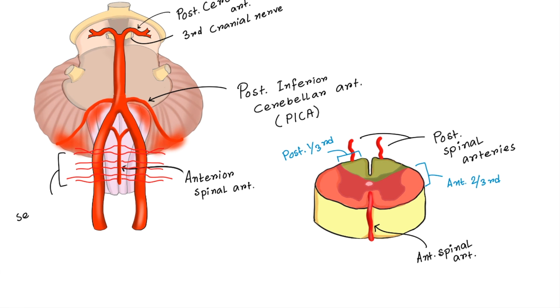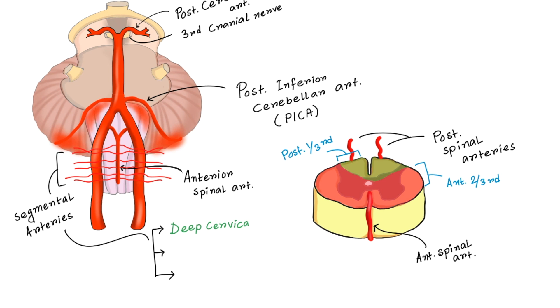There are some other arteries called segmental arteries which help or reinforce the function of anterior spinal artery. This added blood flow helps the anterior spinal artery to supply the lower portion of the spinal cord properly. Anterior segment of the segmental arteries are called anterior radicular artery and posterior segment is called posterior radicular artery. These segmental arteries are coming from different arteries like deep cervical arteries, intercostal arteries and lumbar arteries.